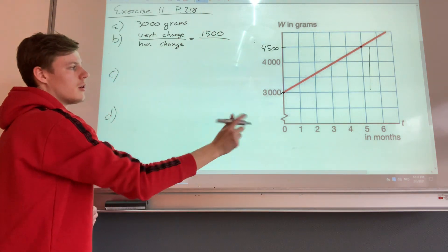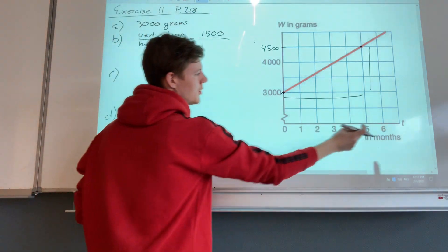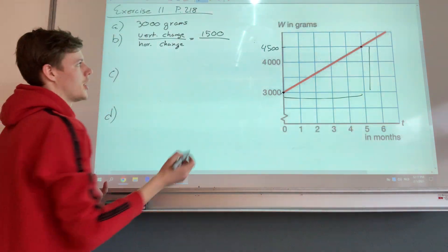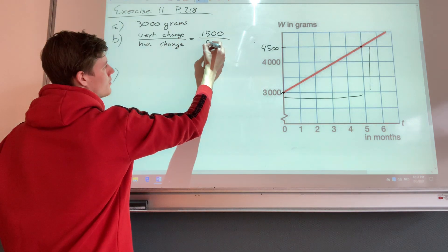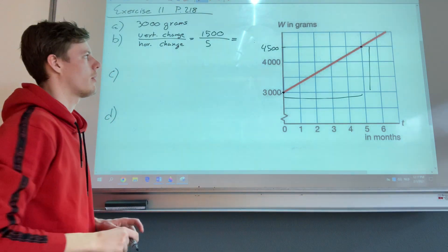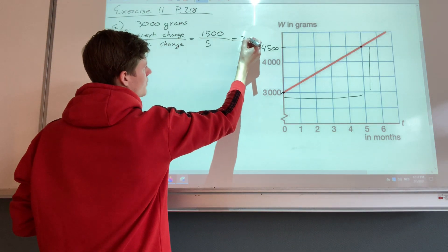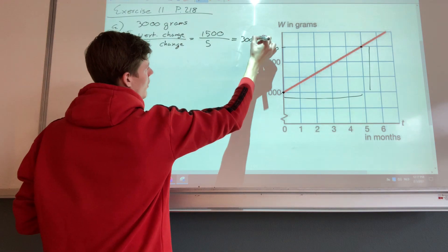And then the horizontal change here is from 0 to 5, so it changes 5. And then you can calculate the gain per month which is in this case 300 grams per month.